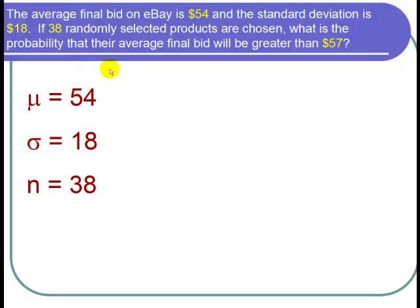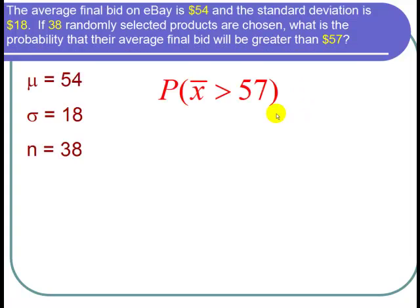And we want the probability that their average final bid will be greater than $57. So the average final bid is an X bar. So I want P, or the probability that X bar is greater than $57.